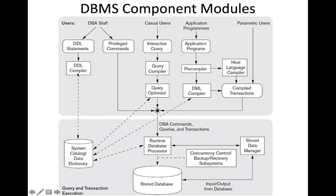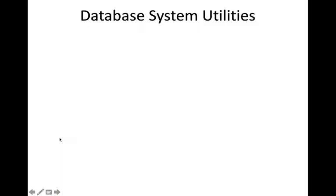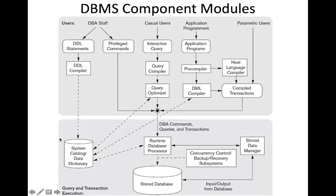The DDL compiler processes all the schema definitions specified by the DDL and stores the schema — that is, the metadata. When the DDL is compiled, we get the metadata about the structure of the database: what attributes are in a particular table and what are the data types of those attributes.